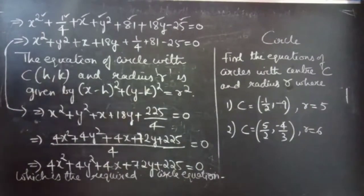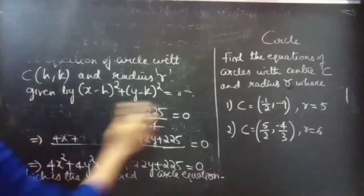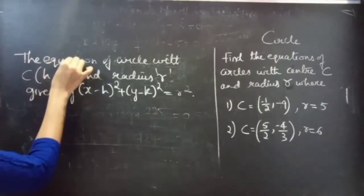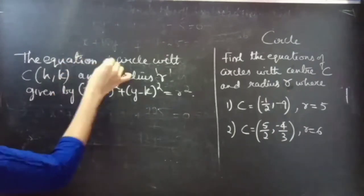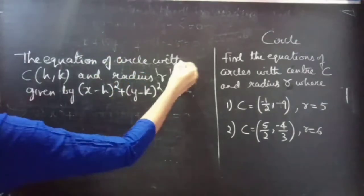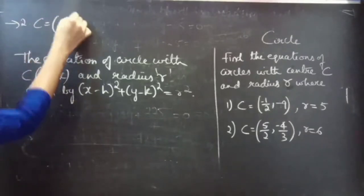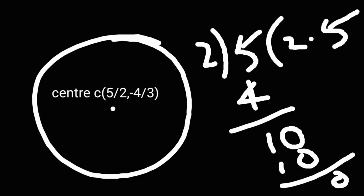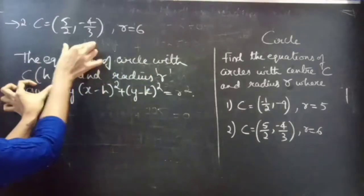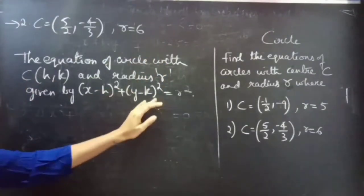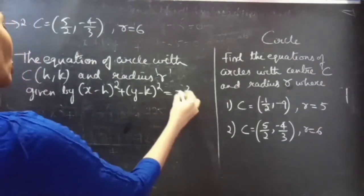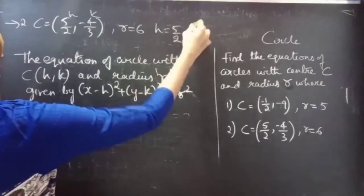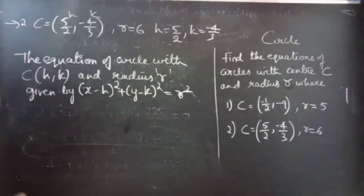Now coming to the second problem. Second one: we are given center (5/2, -4/3) and radius 6. The equation of a circle with center and radius is given by (x - H)² + (y - K)² = R². We have H = 5/2, K = -4/3, and R = 6. We will be substituting all these values.